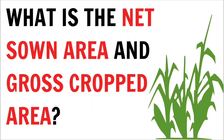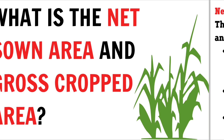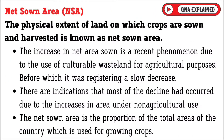What is the net sown area and gross cropped area? Net sown area, denoted as NSA, refers to the physical extent of land on which crops are sown and harvested.